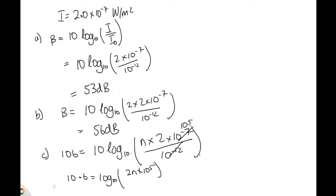And then to get rid of the log, we can raise 10 to the power of both these things. And that gives us 10 to the 10.6 is equal to 2n times 10 to the power of 5. And so finally, solving that on the calculator, n is equal to 199,050. So this is how many machines we'd need to double the sound level. So this is just because of the logarithmic nature of the scale.